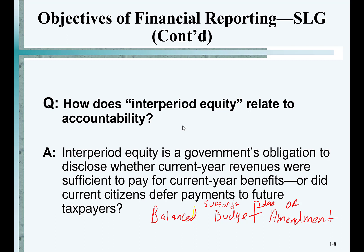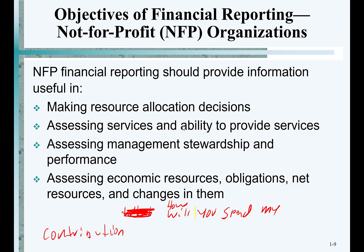So the federal government does not follow inter-period equity — they spend more than they take in every year, pass a law to insist they do that, and then play games to make you think it's somebody else making them do it. For not-for-profits, the key question the financial reports answer is: how will you spend my contribution? We won't say much more about not-for-profits until after the second midterm.